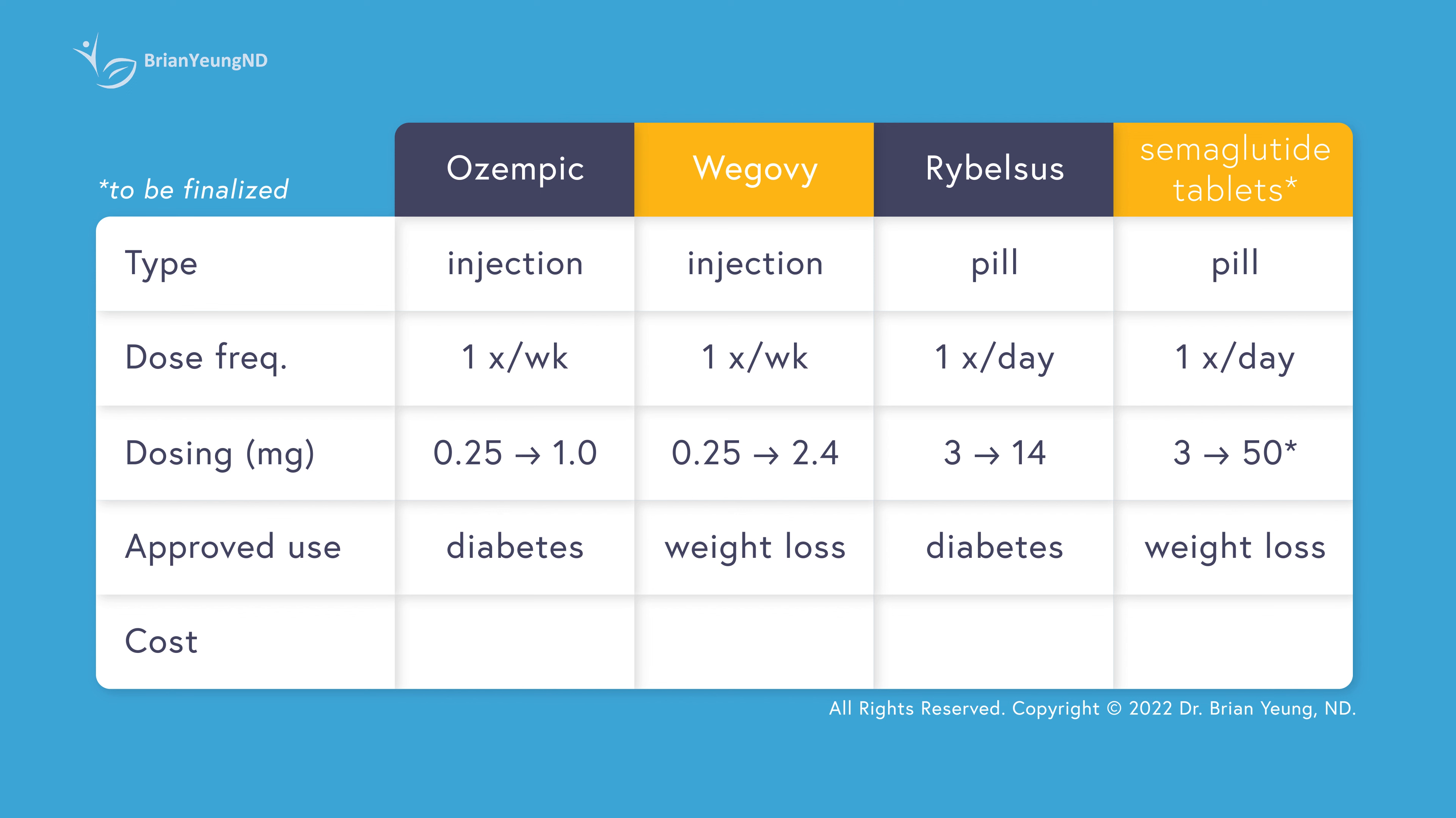Semaglutide is expensive regardless of use, but the pill and injected forms of semaglutide cost about the same monthly. It's when it's prescribed for weight loss, as with Wegovy, that the cost is usually much higher.